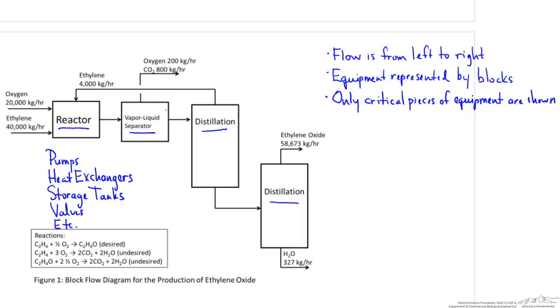I would consider that pumps, most heat exchangers, storage tanks, valves, and similar pieces of equipment should probably not be put on a block flow diagram. These are unnecessary to show.